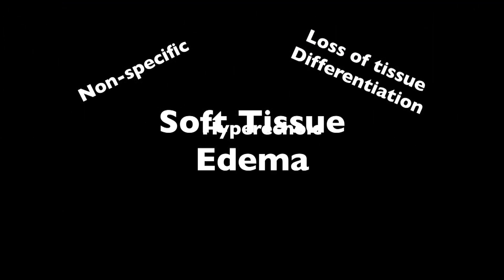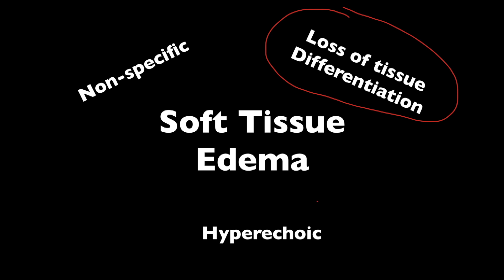What we're talking about today is soft tissue edema, which is what we typically see in cellulitis. Unfortunately, edema due to cellulitis looks exactly like edema due to heart failure or fluid overload — edema in the soft tissues looks the same regardless of the pathology. So you have to be very careful. We're going to look for loss of soft tissue differentiation, and the region will typically be hyperechoic.